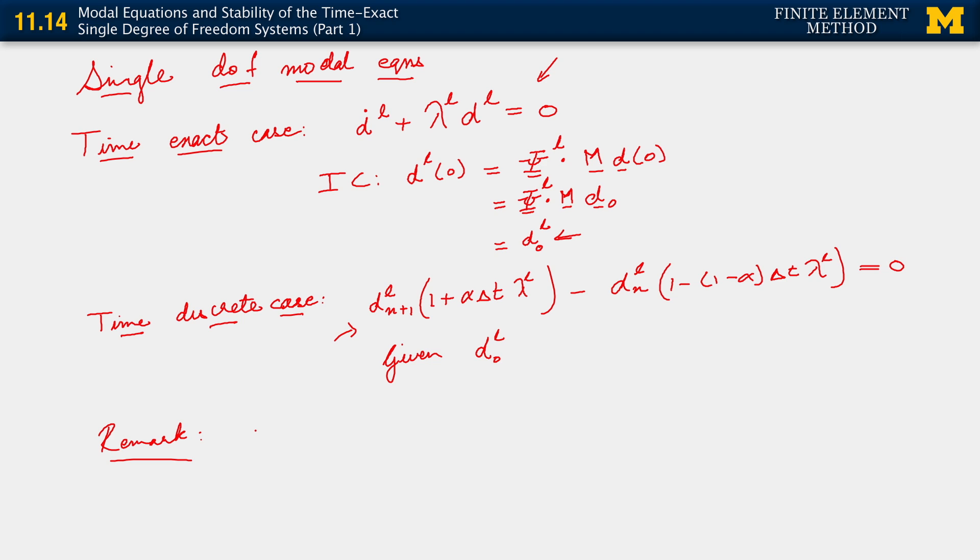What we have done here is the following. We have at one end the time exact matrix vector equation, which is M d̈ + K d = 0, and I'm going to put a box on it here.